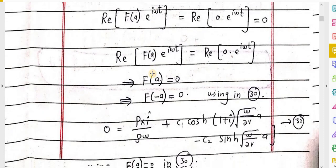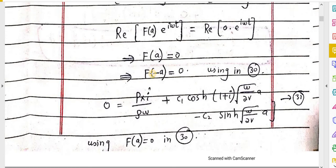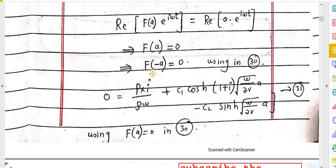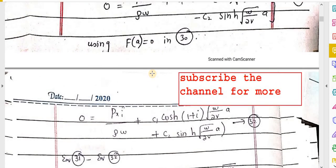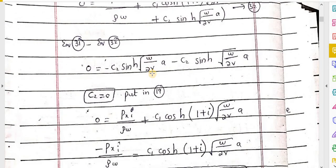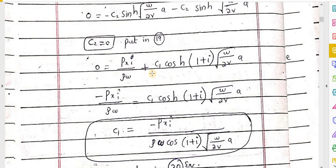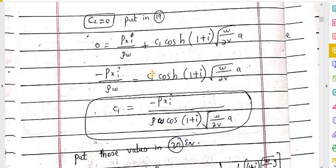Using conditions 13 and 14 in equation 16: f(a) = 0 and f(−a) = 0. Substituting these values into equation 30 gives equations 31 and 32. Subtracting equation 32 from equation 31, we get c2 = 0. Similarly, substituting back gives c1. Putting c1 and c2 into equation 30 gives the final solution.